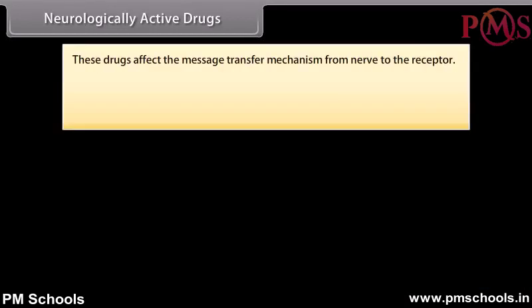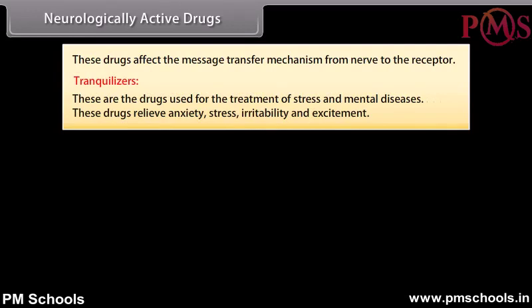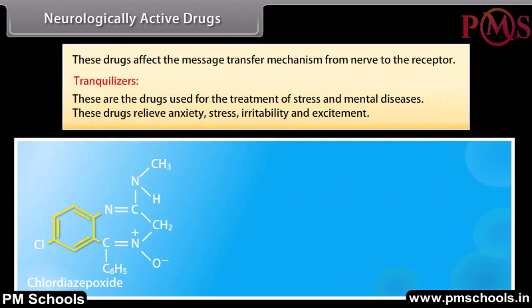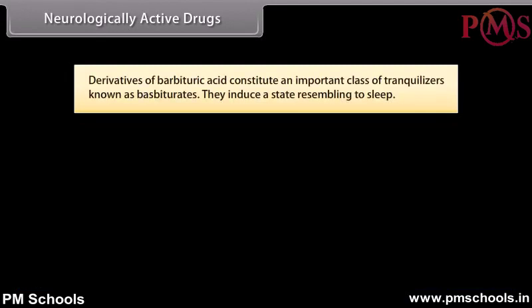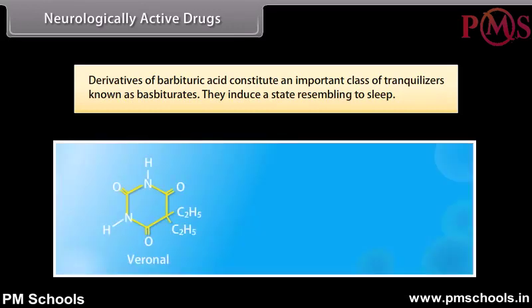Neurologically active drugs: These drugs affect the message transfer mechanism from nerve to the receptor. Tranquilizers: These are drugs used for the treatment of stress and mental diseases. These drugs relieve anxiety, stress, irritability, and excitement. For example, chlordiazepoxide and meprobamate are mild tranquilizers. Derivatives of barbituric acid constitute an important class of tranquilizers known as barbiturates. They induce a state resembling sleep. For example, veronal and luminal.